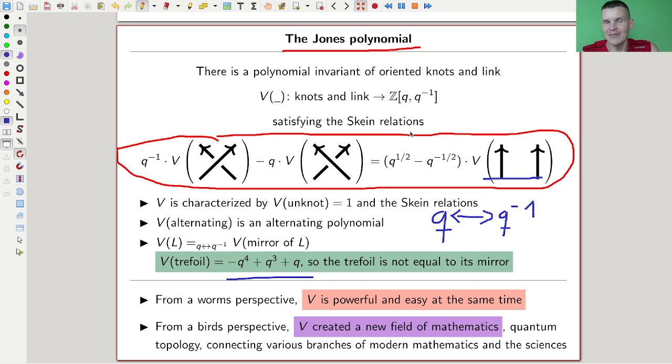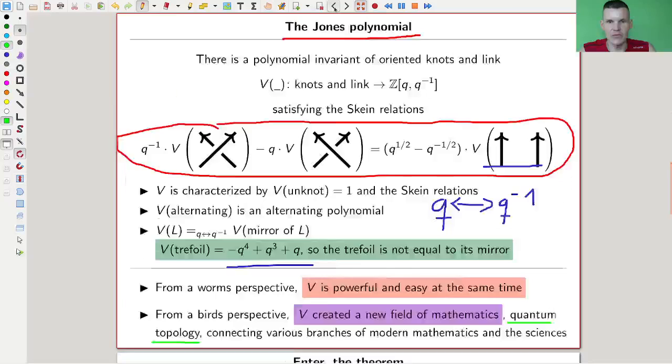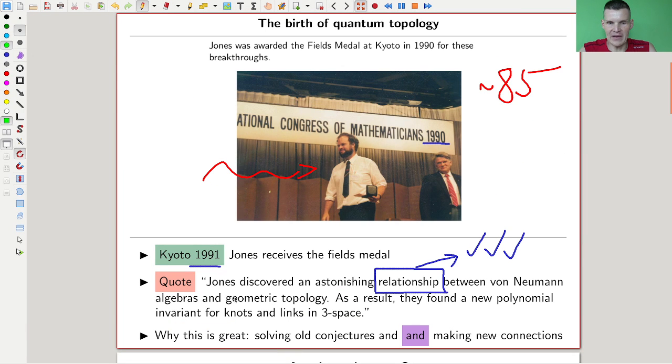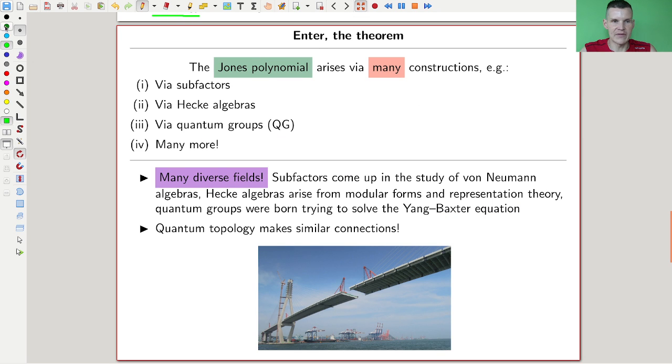If you have never done the computation with the Jones polynomial, go to the Wikipedia page—it is explained very nicely—or one of Jones's papers, 'The Jones Polynomial for Dummies,' is linked in the description. But what is really the key here is it created a new field of mathematics, quantum topology, which serves as a bridge between various different fields of mathematics.